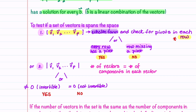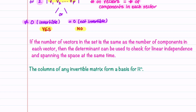The second method is if the number of vectors in the set equals the number of components in each vector — just like for checking linear independence. If the determinant is not equal to 0, the vectors span the space; if the determinant equals 0, the vectors do not span the space. If the number of vectors matches the number of components, the determinant can check both linear independence and spanning at the same time. The columns of any invertible matrix form a basis for Rn.